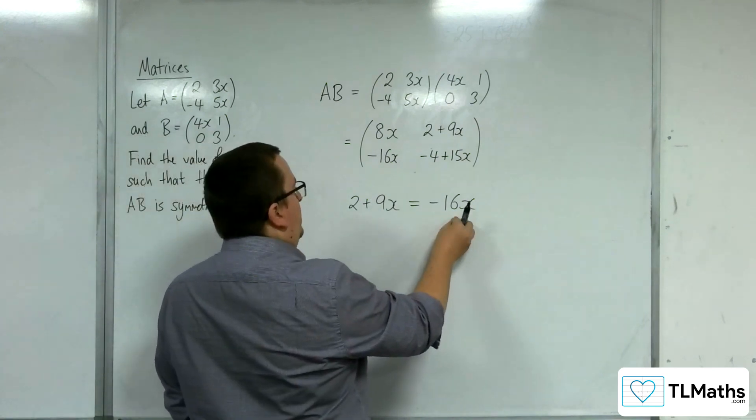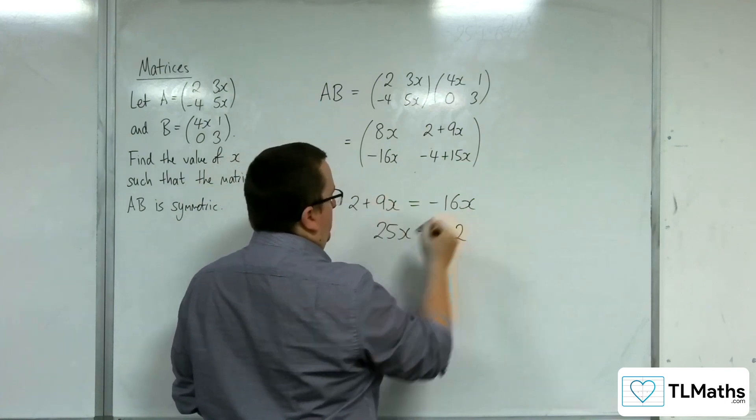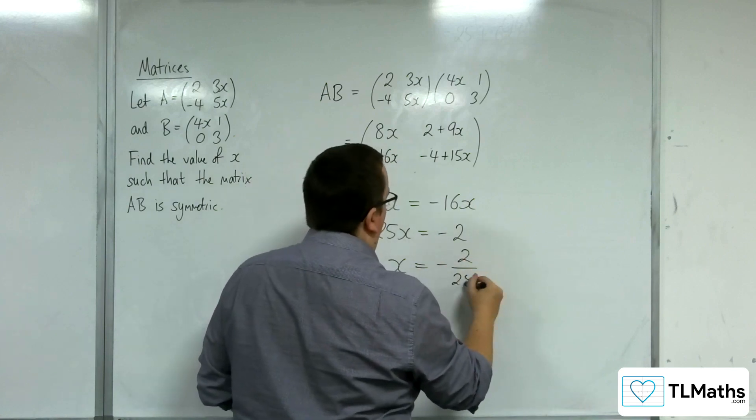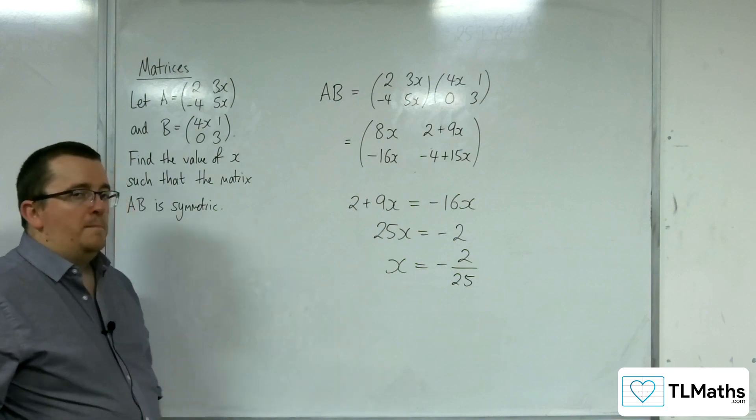So adding the 16x to both sides gets us 25x. Subtracting 2 from both sides gets us minus 2. So x must be minus 2 over 25, and it needs to be that value in order for AB to be a symmetric matrix.